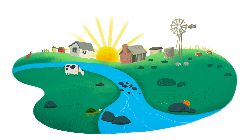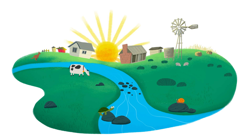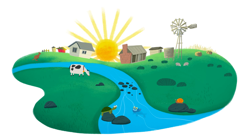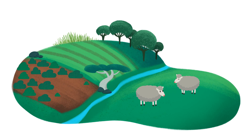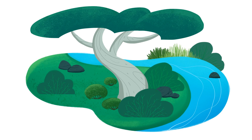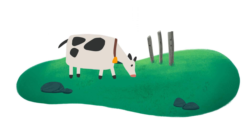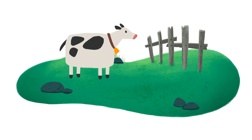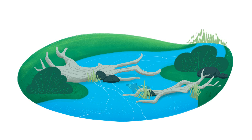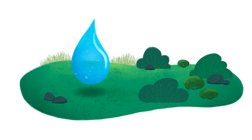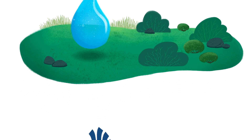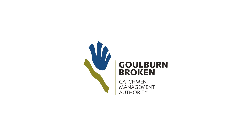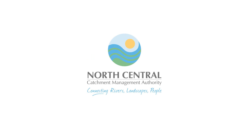We're working with the community to help our rivers and wetlands cope by supporting sustainable farming, revegetation, fencing, fish stocking, re-snagging and use of environmental water. To find out more, contact the Goulburn Broken Catchment Management Authority or the North Central Catchment Management Authority.